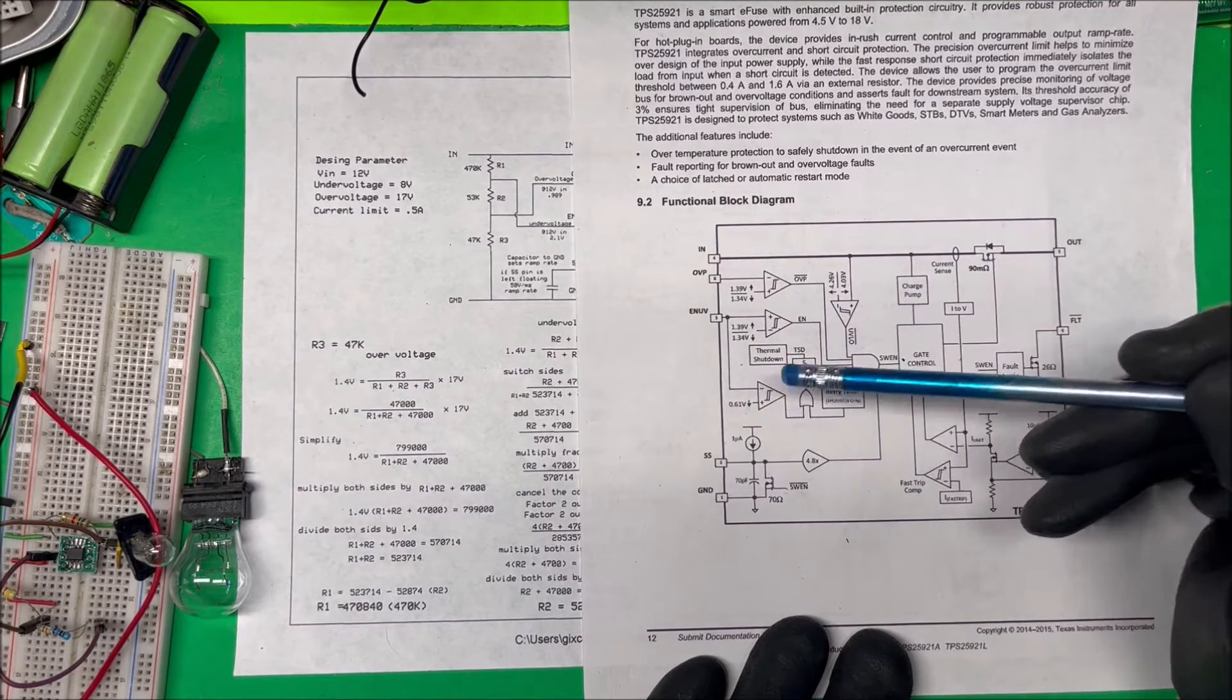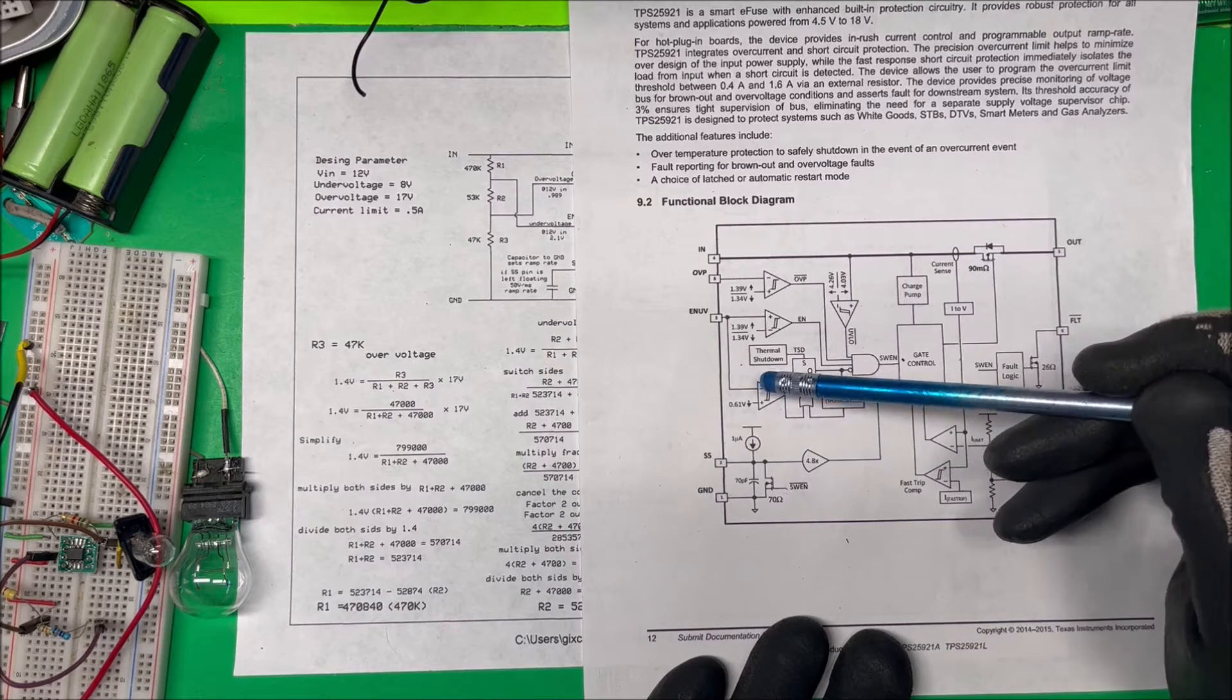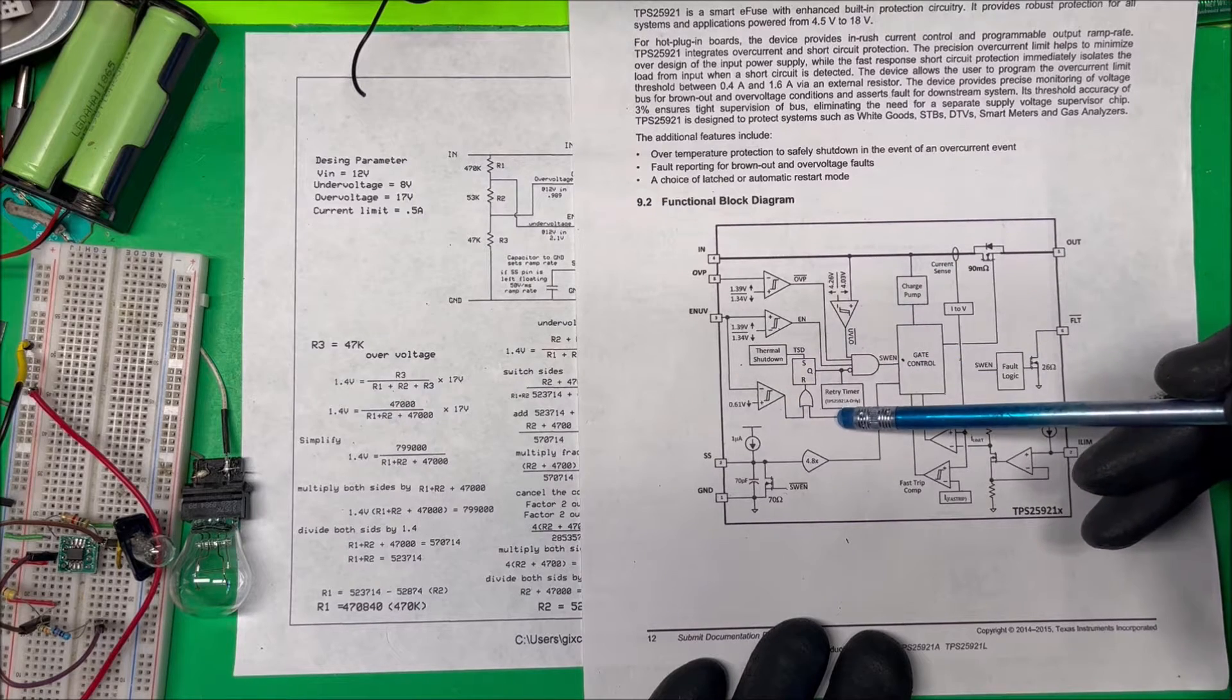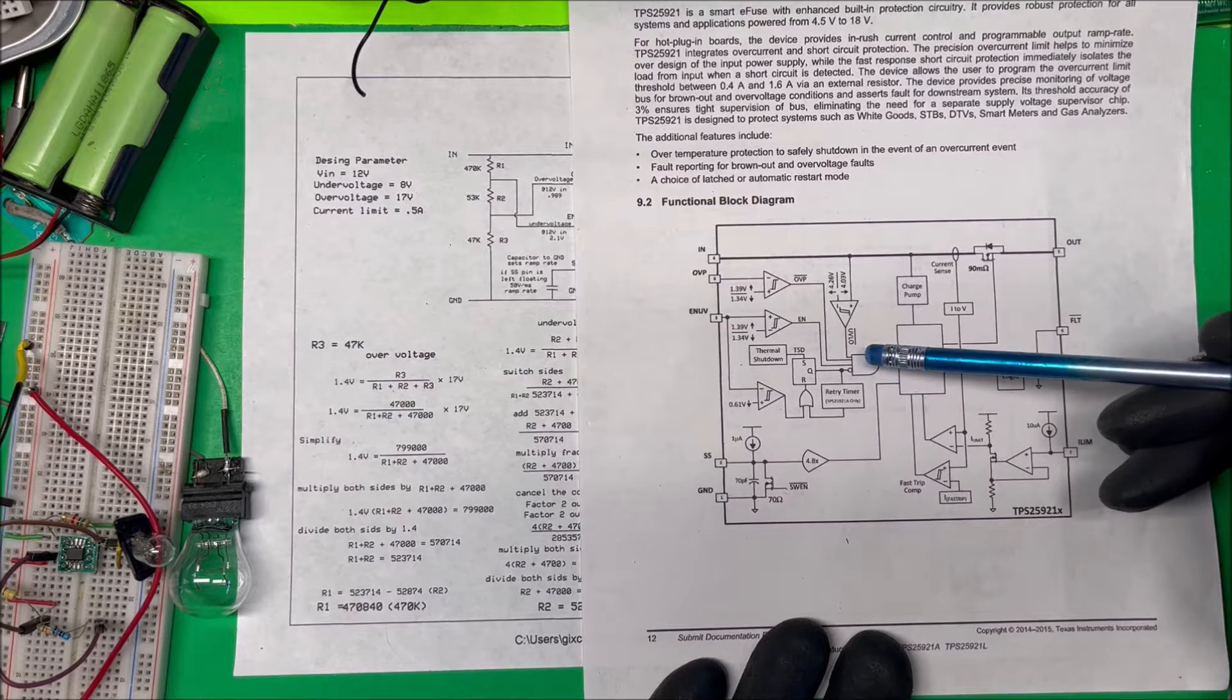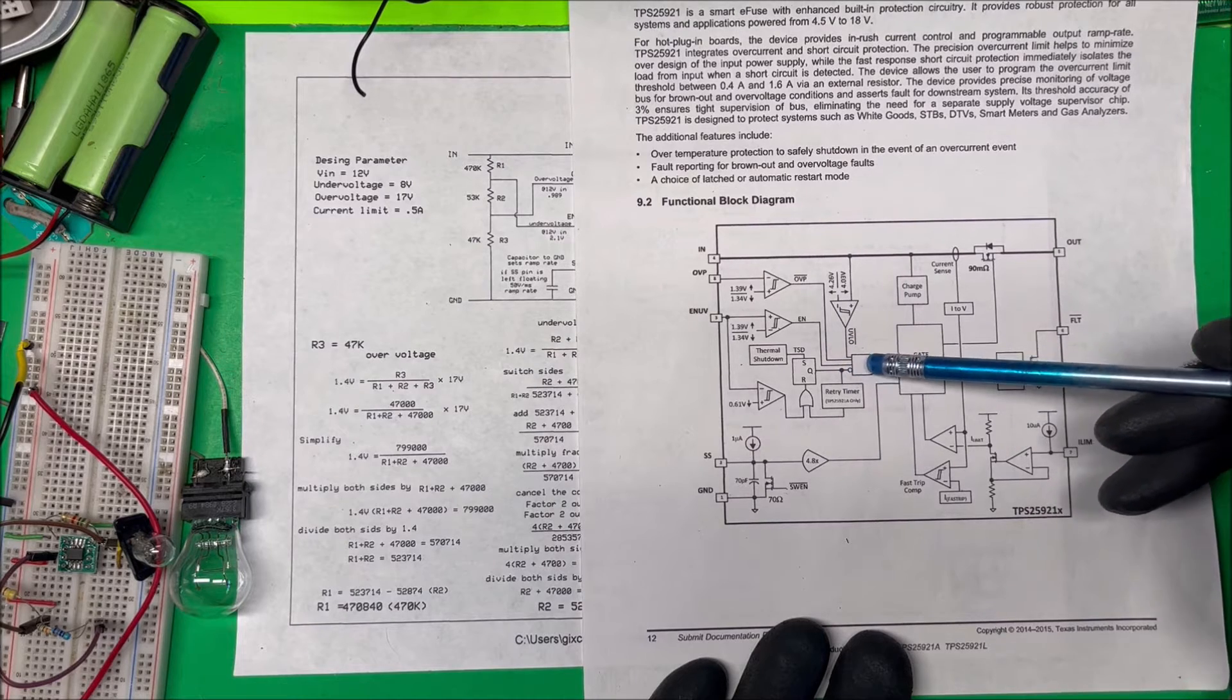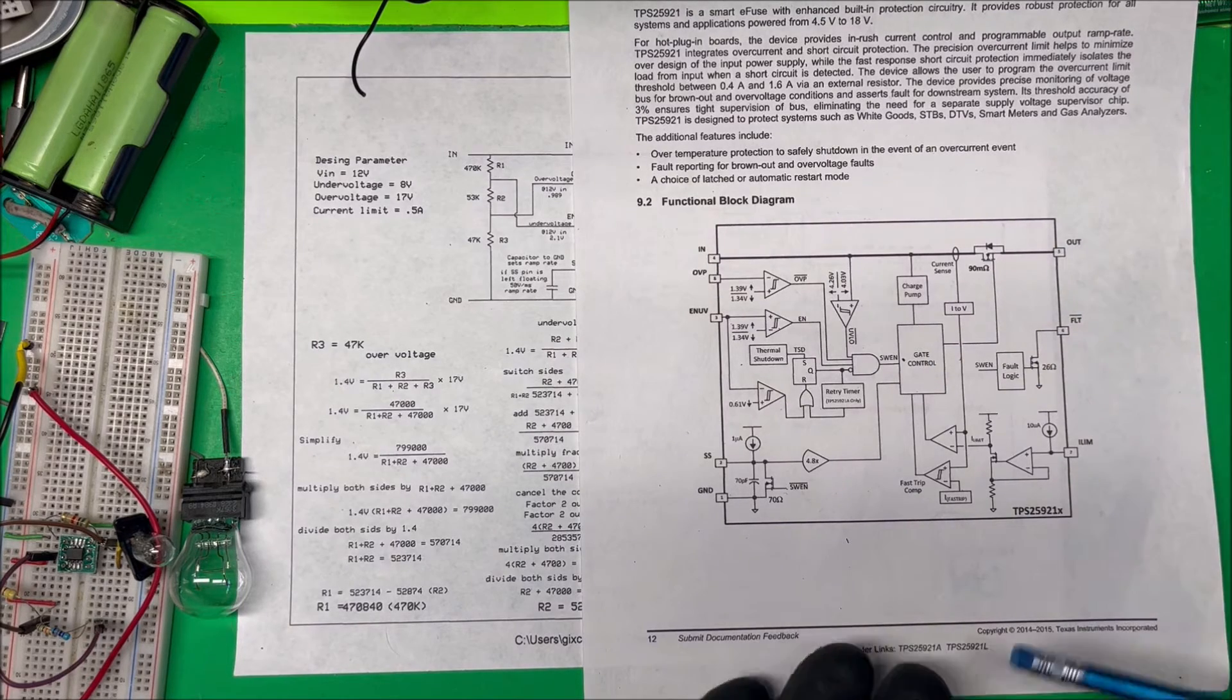This one here is 0.6 volts internal reference on the positive side, and we have 2 volts on the negative, so this one's going to go low. We have a retry timer and thermal shutdown combined with that. This is an AND gate here with an inverted input. If these three are high and that one's low, then this AND gate is going to turn on, go to the gate controller, and turn on our FET to turn the load on.